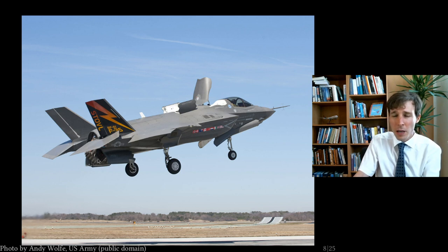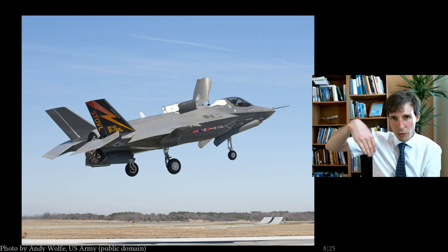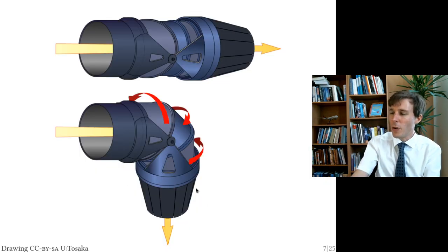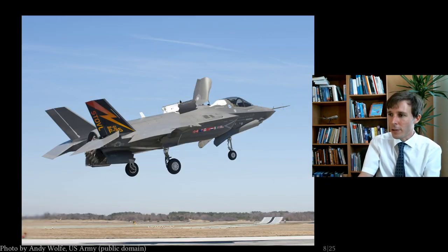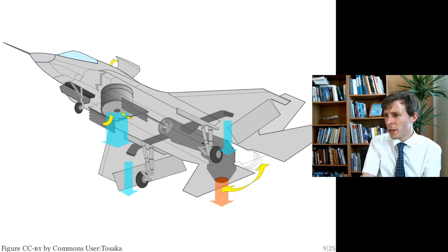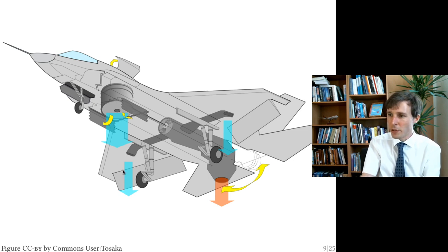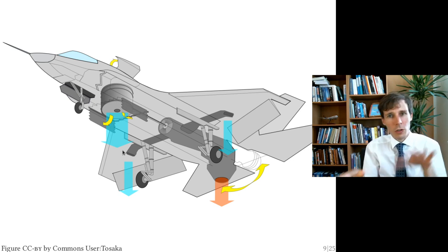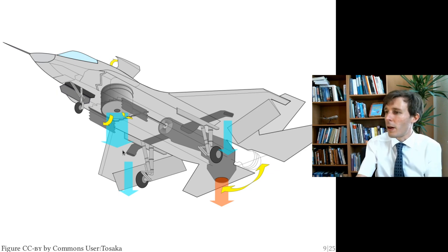The nozzle at the back twists and swivels downward, and the front fan sucks air in and pushes it down. From the diagram: the jet engine pushes hot gases downward at the back, the front fan pushes air downward, and on the sides there are two nozzles for balancing the aircraft around another axis.